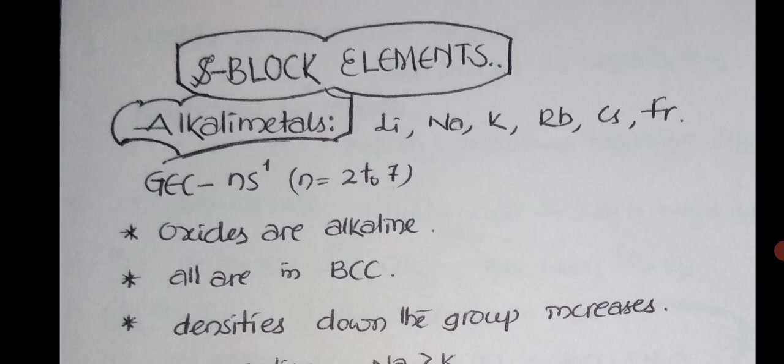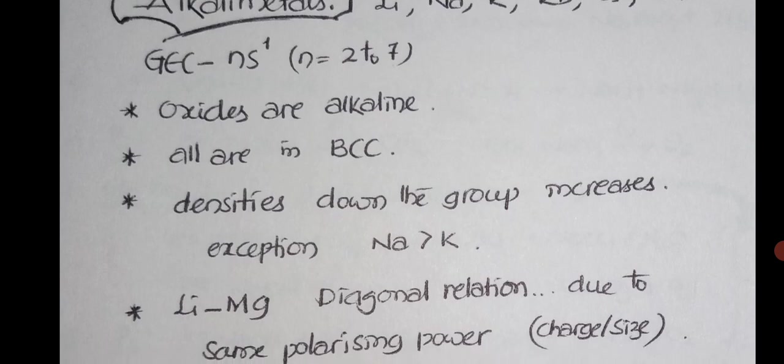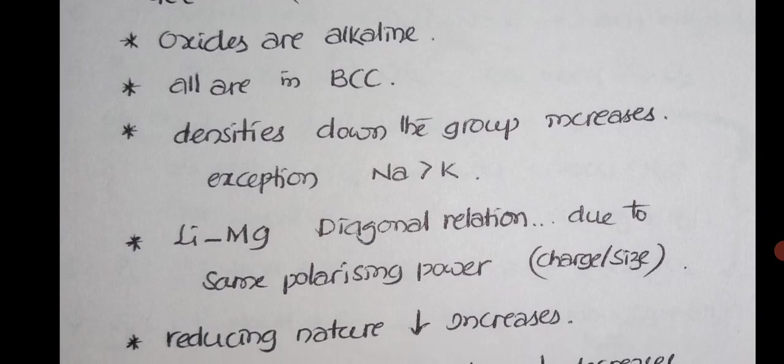Alkali metals: lithium, sodium, potassium, rubidium, cesium, and francium. The general electronic configuration is NS1, where N is equal to 2 to 7. All these oxides are alkaline in nature, that's why the name is given as alkali metals. All are in BCC structure, body centered cubic structure.